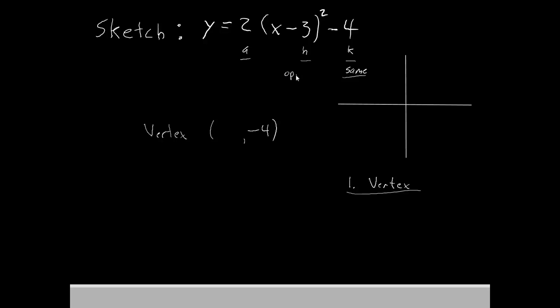Now inside the parentheses, we have negative 3, but remember that the sign is opposite when it's inside the parentheses. So our x-coordinate is not negative 3, it is positive 3. And our y-coordinate, since we have a negative 4 on the outside, is still negative 4. Let's plot that point. We'll just go over by 3, and we'll go down by 4. We'll put our vertex right there. That'll be our first point.